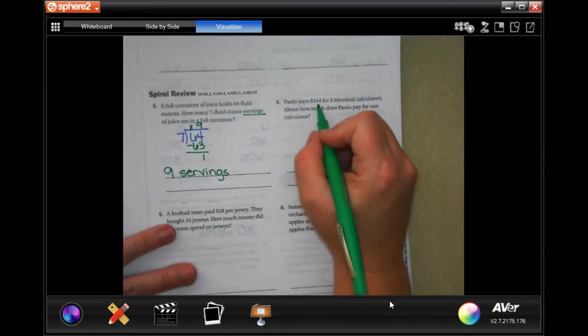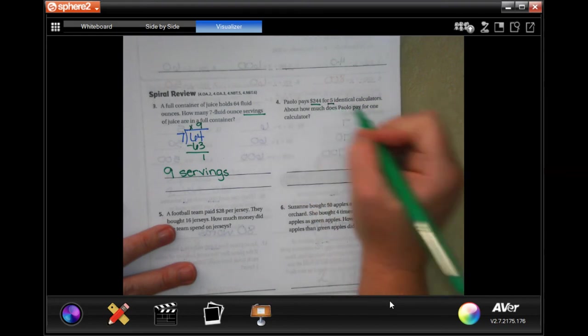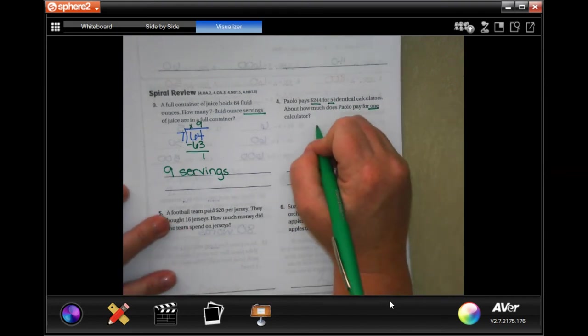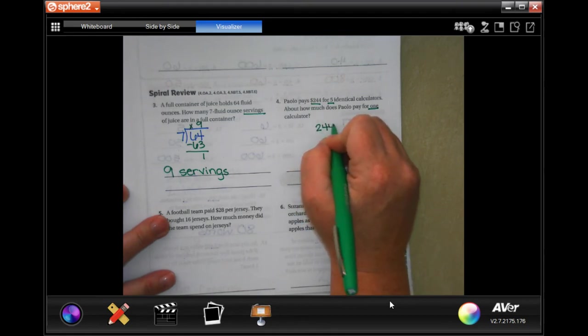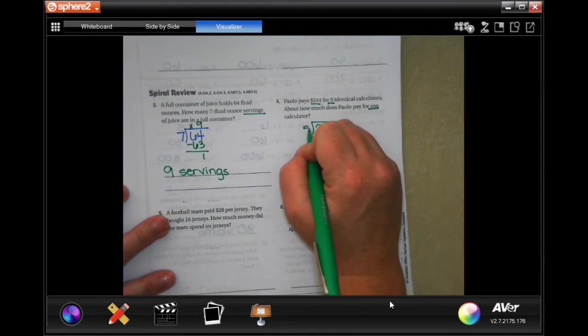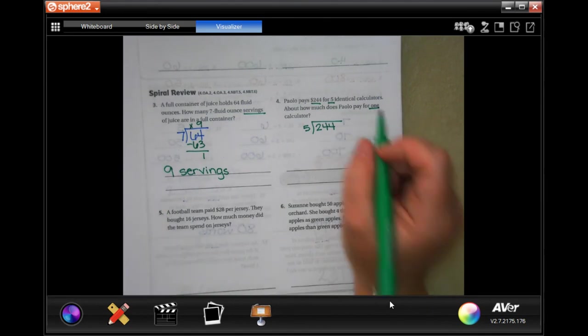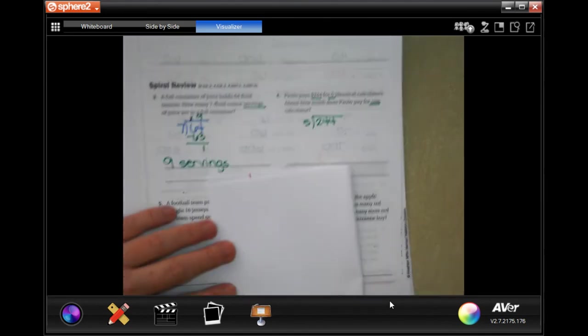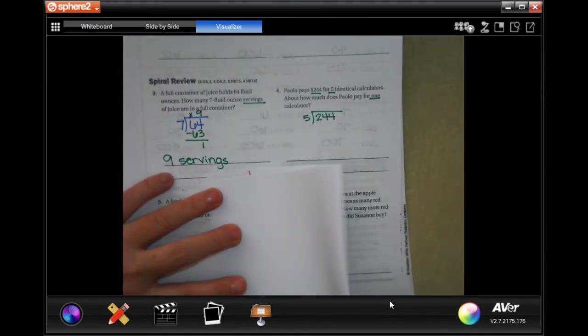Hollow pays two hundred and forty four dollars for five identical calculators. How much did he pay for one calculator? So we need 244 divided by five. I'm actually going to use our scratch paper for this one just so that we've got it.